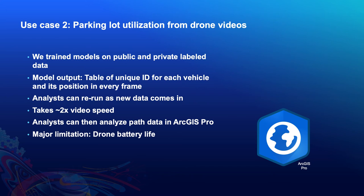We trained our models on both publicly available datasets and custom-labeled data. This model outputs a straightforward table containing a unique ID for every vehicle from the video and its position in every frame. There's no real-time component here because there isn't a real-time need — videos come in from time to time, and whenever that happens, an analyst simply runs the new video through the model. The machine they're running this on requires a GPU to finish in a reasonable amount of time, about twice the length of the raw video. Once processed into a table that can be imported into ArcGIS Pro, a variety of analytical tools are available, such as hotspot analyses.